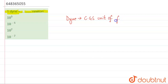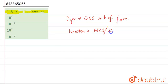Newton is the MKS, or SI, unit of force. We have to find the CGS to SI conversion — that means converting one dyne to newtons.